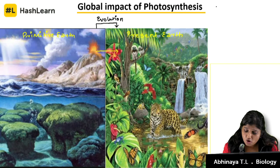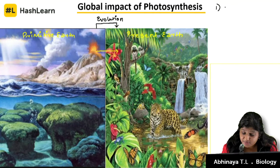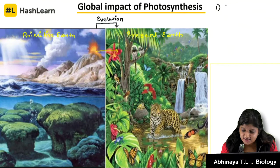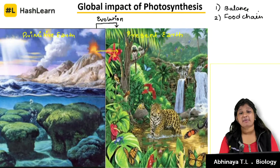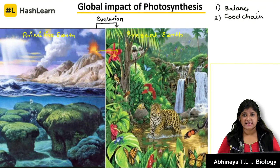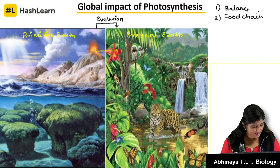Photosynthesis has led to the evolution of primitive earth to present earth by liberating two dominant gases. Oxygen is produced by photosynthesis; carbon dioxide is given out by respiration. These two gases have led to the evolution to the present earth. One global impact of photosynthesis is maintaining the balance of oxygen and carbon dioxide in our environment. Second, the food chain of the present earth — we all depend on plants for food, and this cycle is maintained by photosynthesis.